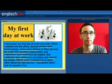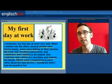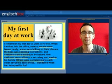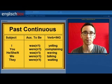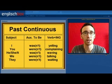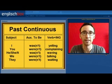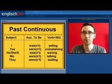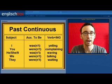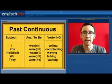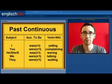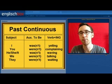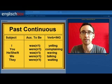How do we form the past continuous? And when do we use the past continuous? Let's look at the structure. We start with the subject, then we have the auxiliary verb 'to be' in the past tense, and then we have the verb with -ing.